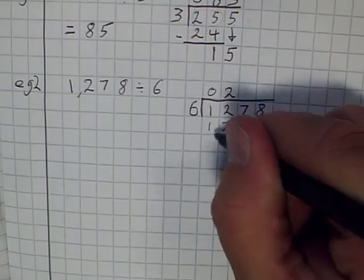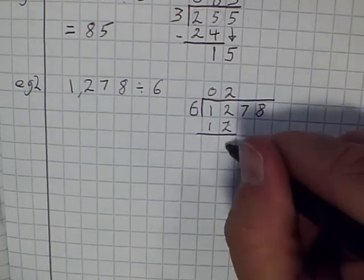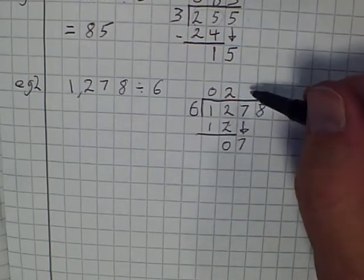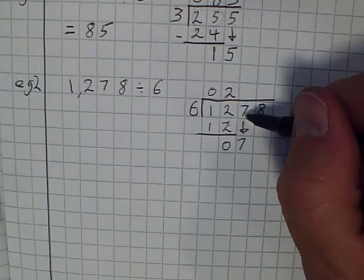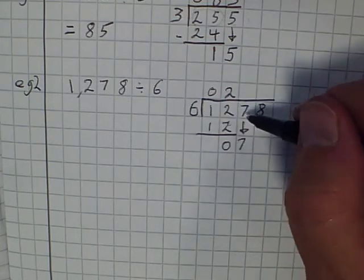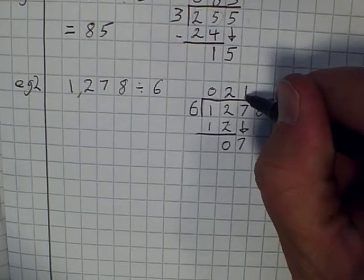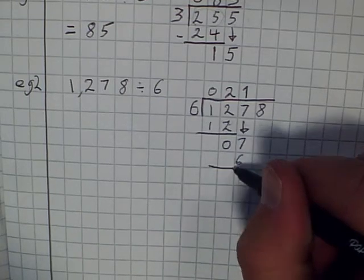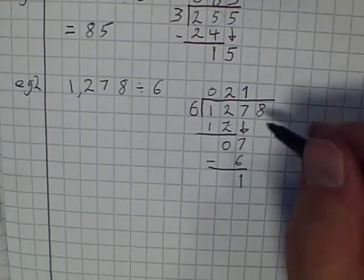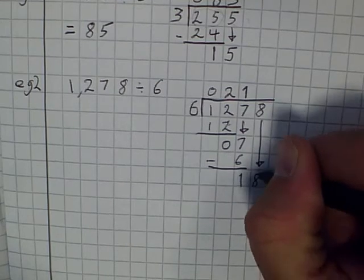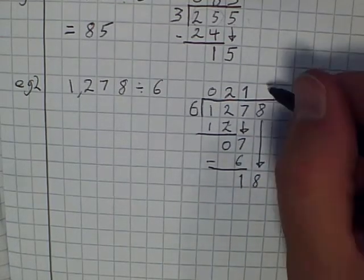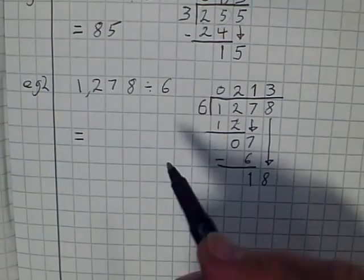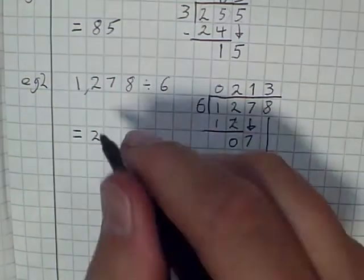Now because it goes in exactly 2 times, I don't have anything left over. I can write this here if I like, showing me nothing left over, or I could and then bring down the 7. But you should be able to see that I could have just gone straight onto the 7 if I had not have anything left over. So how many times does 6 go into 7? It goes in 1 time. And 1 lot of 6 is 6. So 7 take away 6 is 1, that's what I've got left over. So I bring down the 8. How many times does 6 go into 18? It goes in 3 times. So my answer to 1,278 divided by 6 is 213.